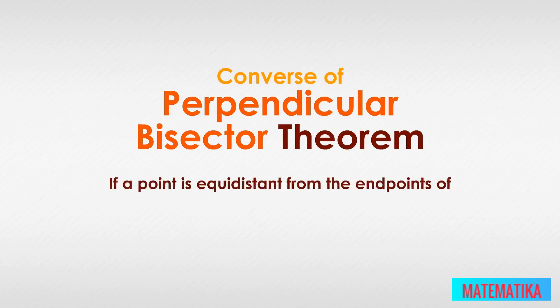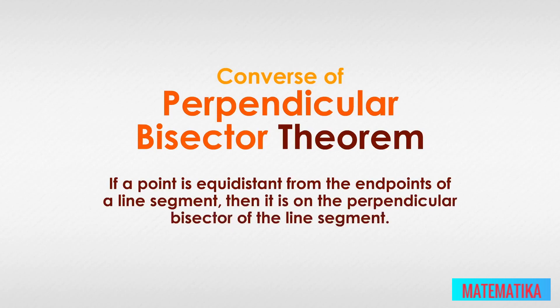If a point is equidistant from the endpoints of a line segment, then it is on the perpendicular bisector of the line segment. You can show this too.